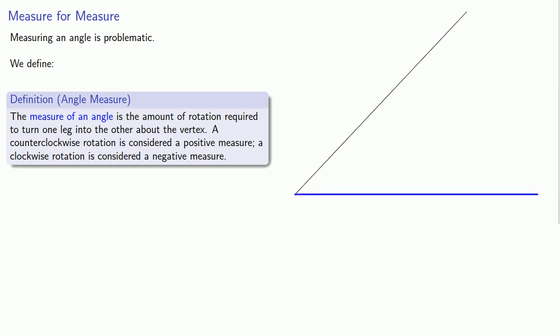So we might take one leg of the angle and rotate it around the vertex until we get to the other leg. Since we rotate it counterclockwise, this would give us a positive measure. We could also rotate clockwise, and the amount of rotation would be a negative amount.